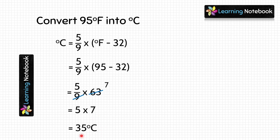Simplify it and we get 5 into 7, which equals 35. So the answer is 35 degrees Celsius. 95 degrees Fahrenheit equals 35 degrees Celsius.